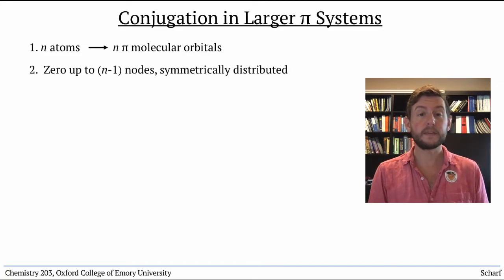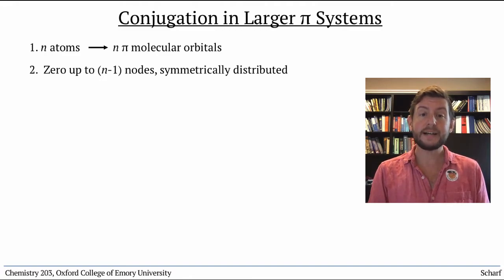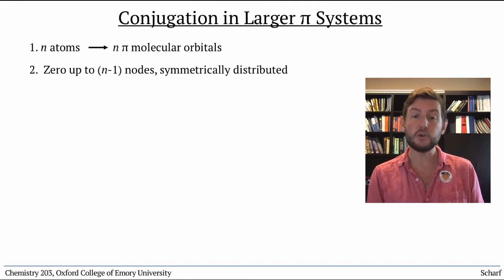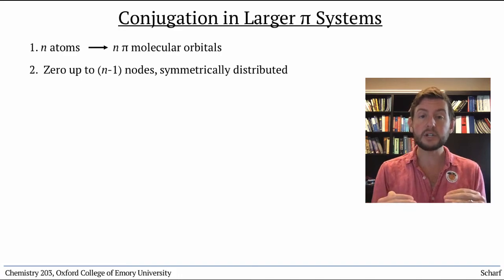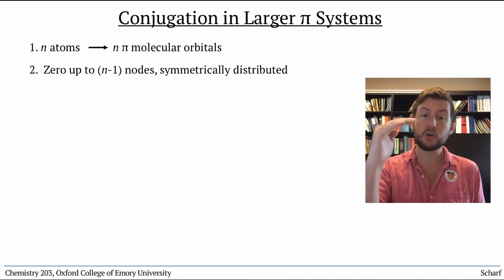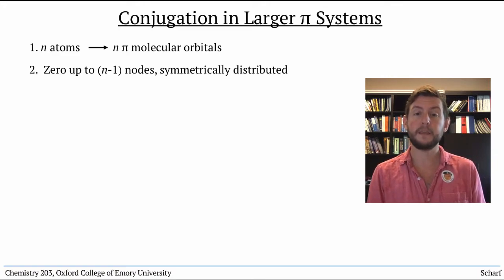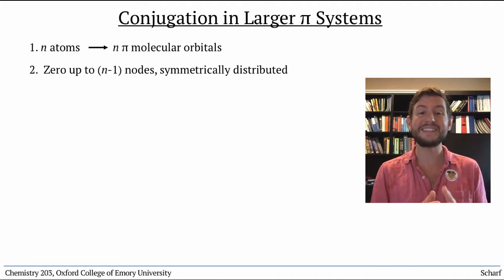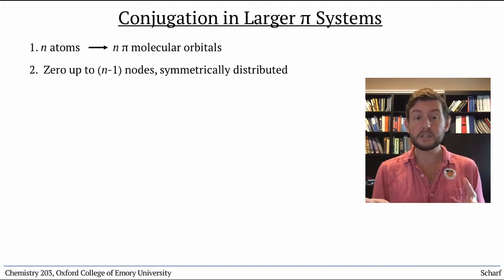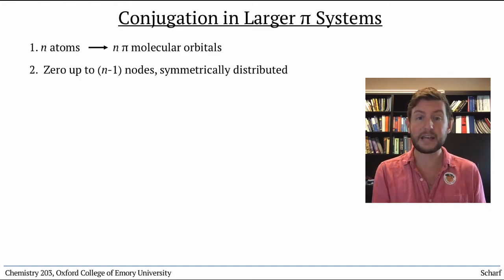Number two, each orbital has a different number of nodes. The lowest energy orbital has zero nodes, and the highest energy orbital has N-1 nodes. The nodes are always distributed symmetrically. So for instance, the orbital with one node always has it smack dab in the middle.